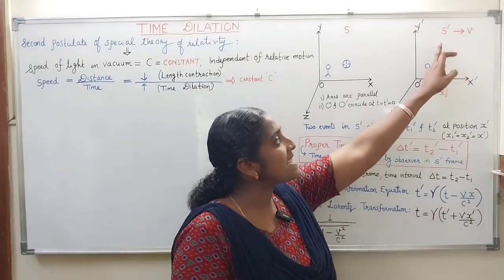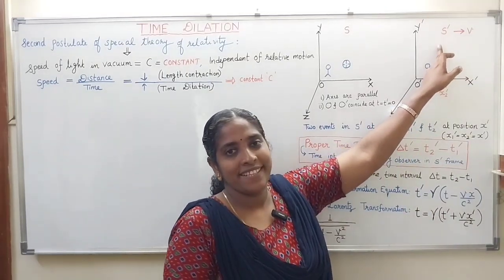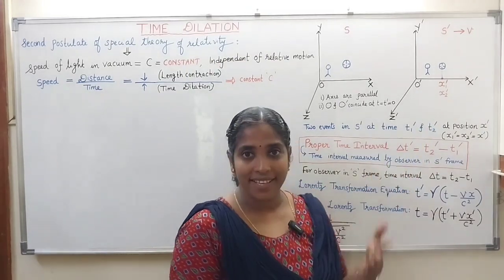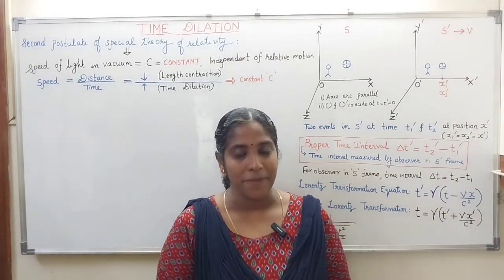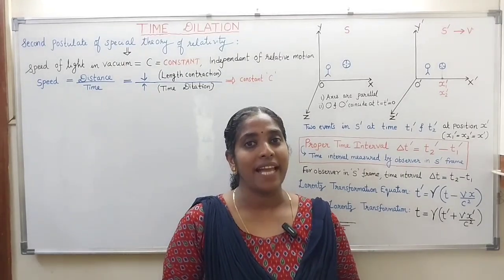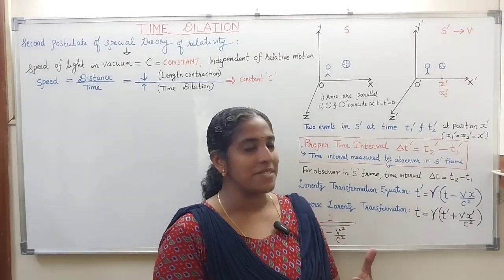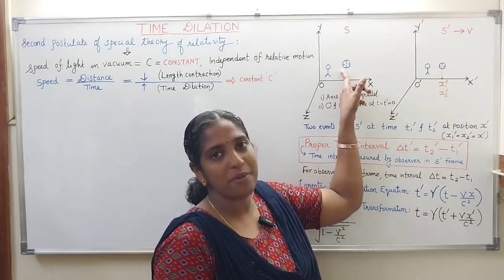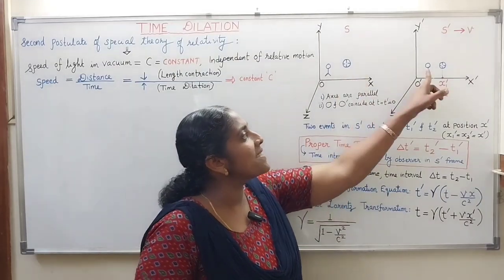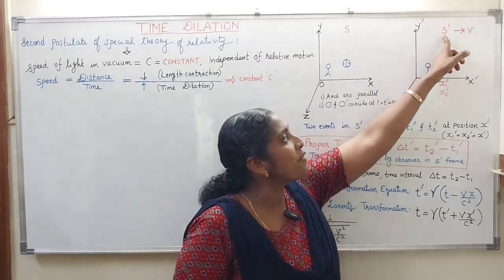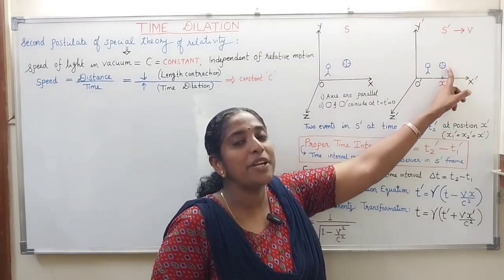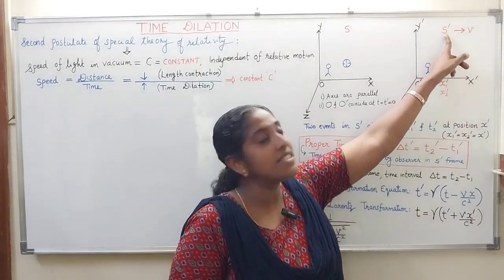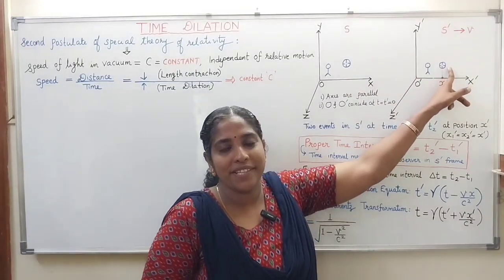Let a physical event take place in the S-dash frame of reference. The physical event could be the lighting of a bulb, or a lecture — I start a lecture at one position and end it some time later. That time interval can be measured by two observers: one in the S-dash frame of reference and another in the S frame of reference.